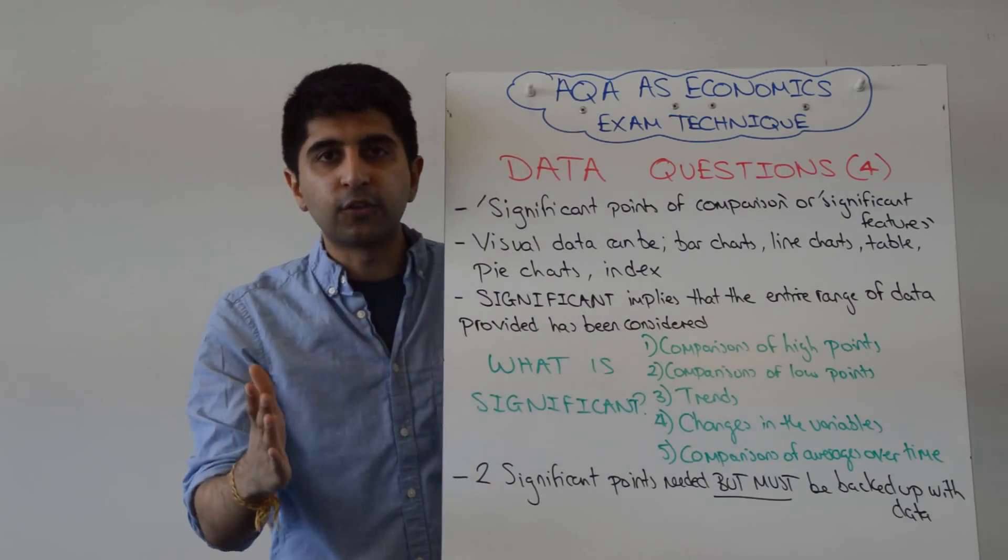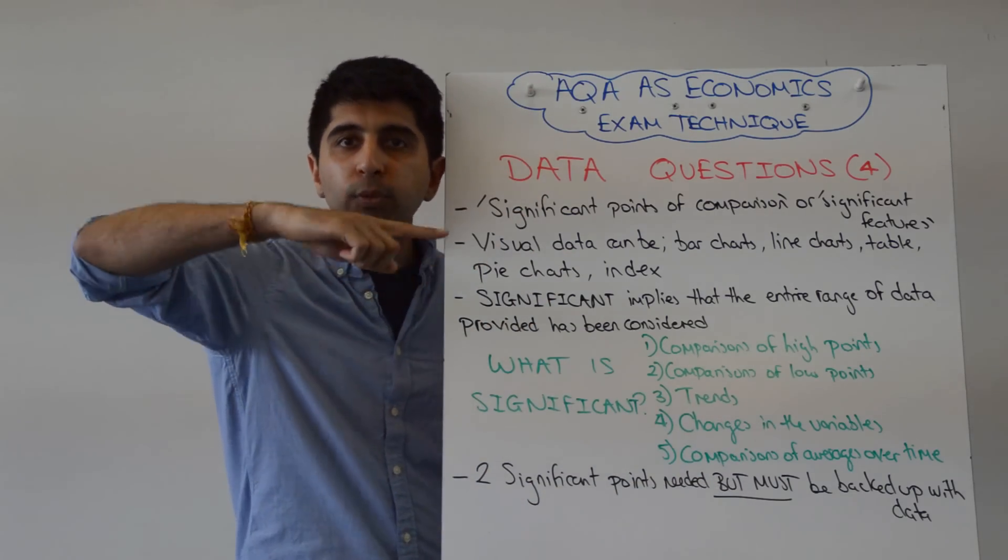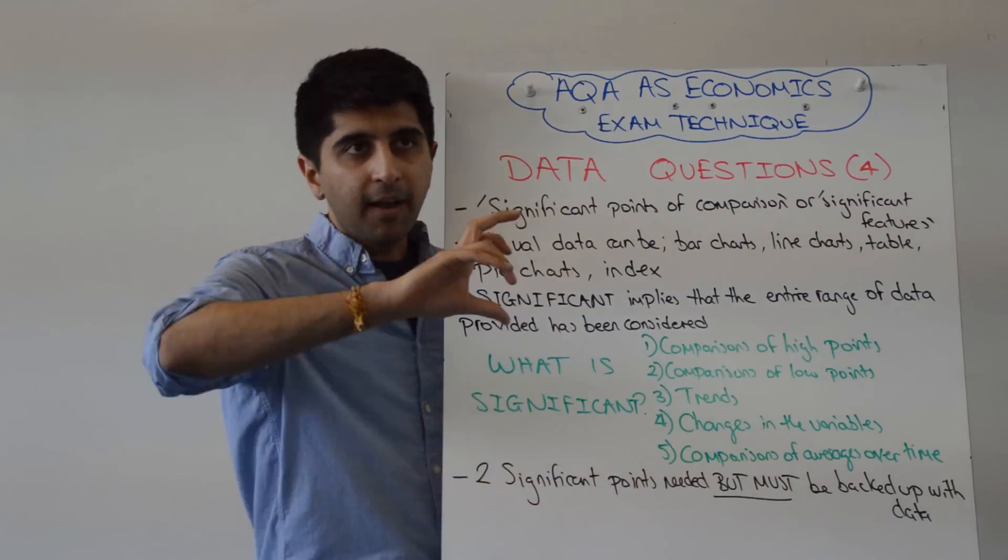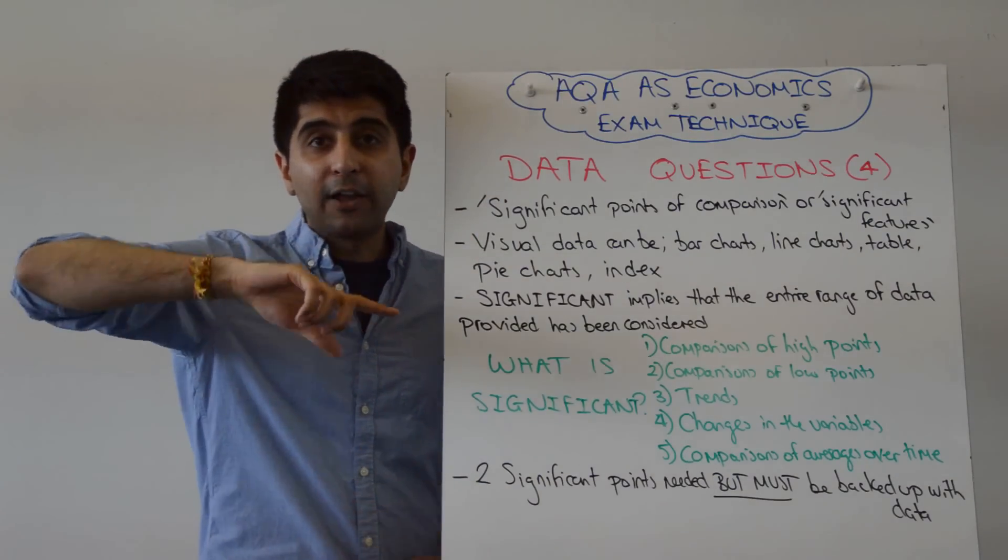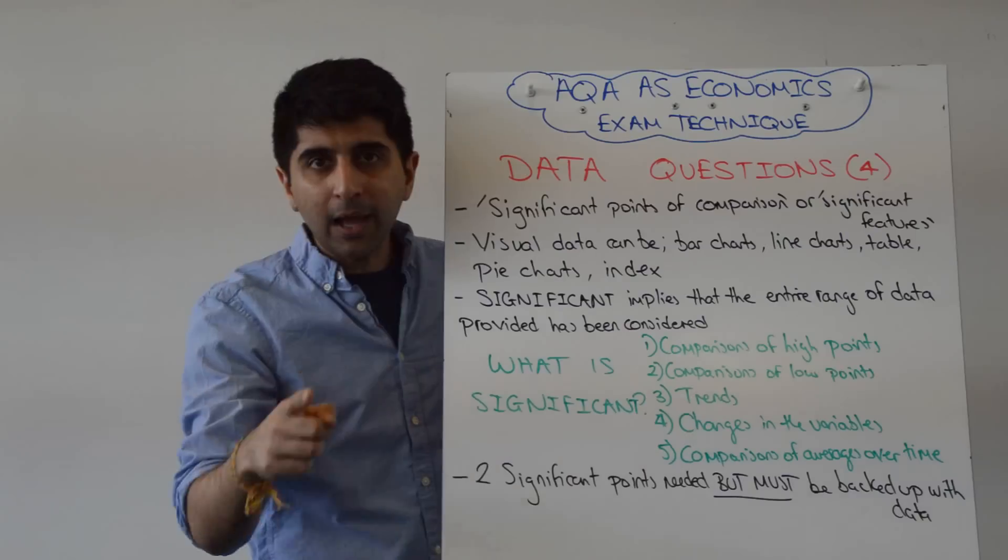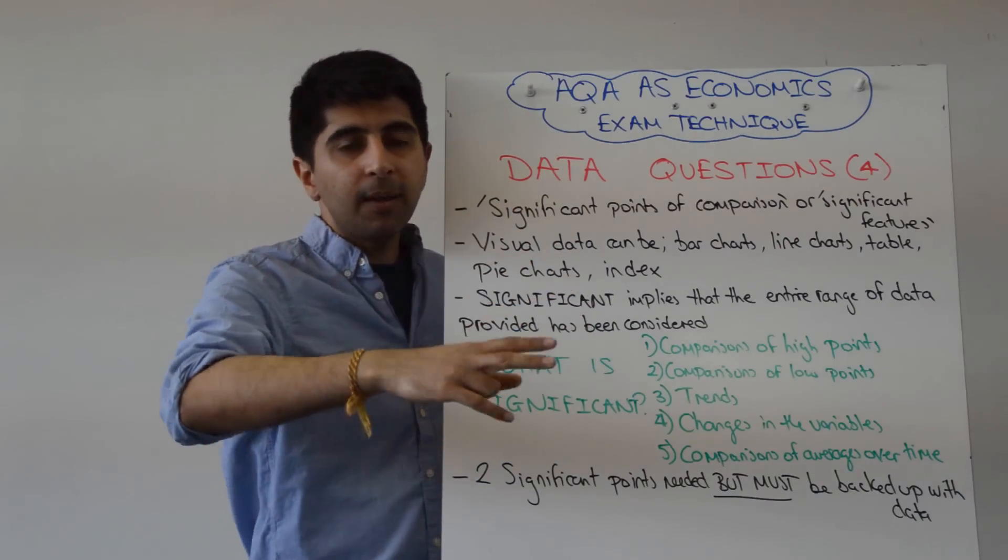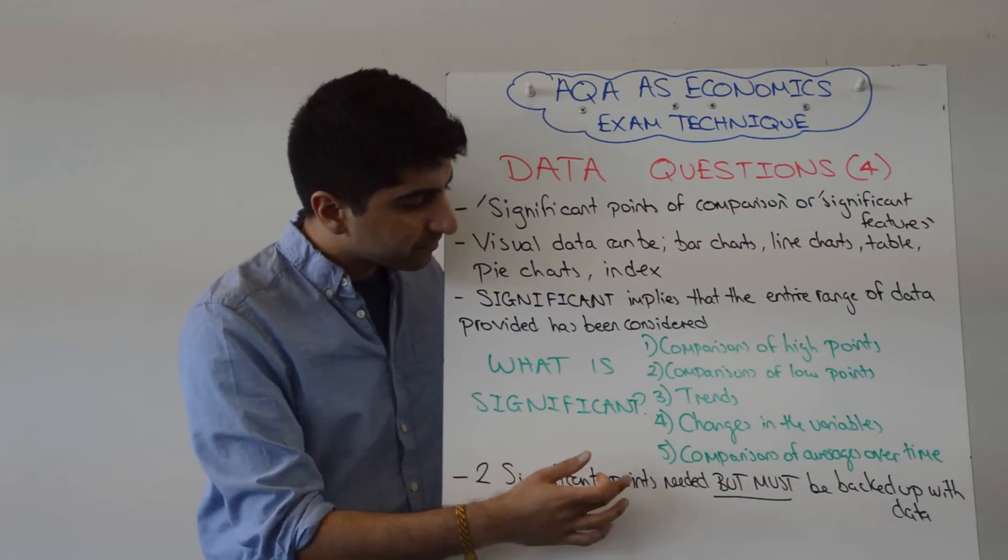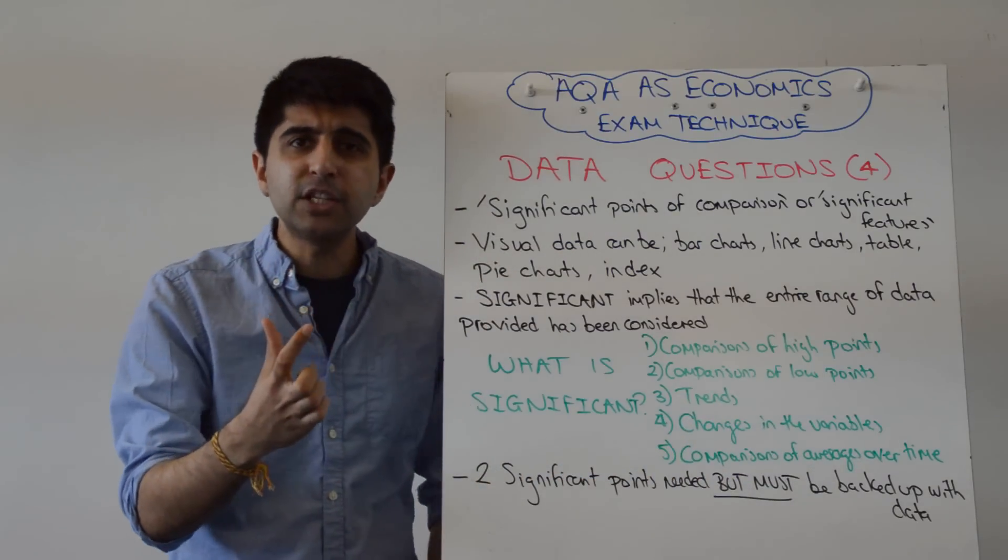It could be looking at trends. So maybe it's downward trends or upward trends. Maybe it's downward trends in one specific period. Maybe it's upward trends in one specific period. Maybe as one variable has gone or showed an upward trend, the other has shown a downward trend. Maybe in the same period of time, both have shown upward trends. Again, fantastic to look at trends.